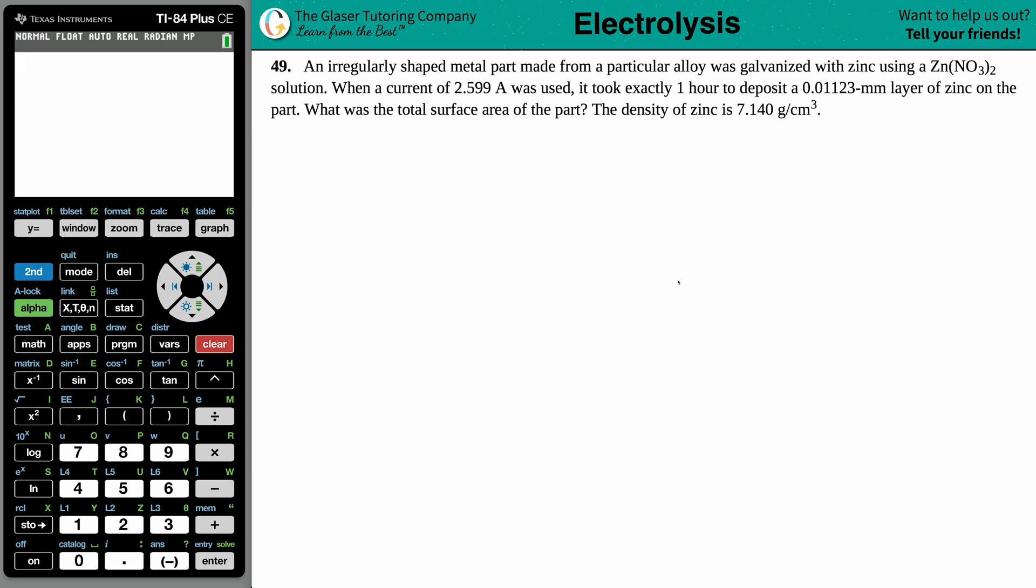Number 49. An irregularly shaped metal part made from a particular alloy was galvanized with zinc using a Zn(NO3)2 solution. When a current of 2.599 amps was used, it took exactly one hour to deposit a 0.01123 millimeter layer of zinc on the part. What was the total surface area of the part?